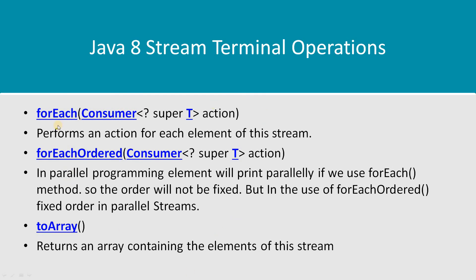Next is forEach. It takes a Consumer, which is a predefined functional interface. forEach performs an action for each element of the stream — whatever function you specify is applied to every element. A simple example is printing all elements of your input stream using forEach with a print statement.